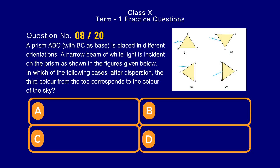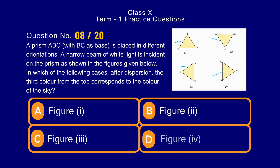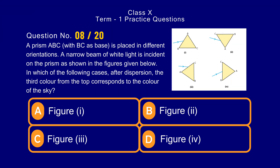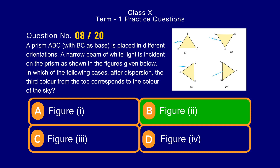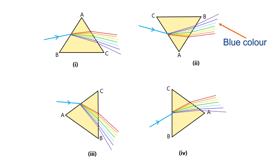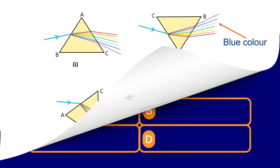Question number 8. A prism ABC is placed in different orientations. A narrow beam of white light is incident on the prism as shown in the figure. In which of the following cases, after dispersion, does the third color from the top correspond to the color of the sky? Options: a) figure 1, b) figure 2, c) figure 3, d) figure 4. The correct answer is option b) figure 2. The color of the sky is blue. The blue color appears third from the top when the prism is inverted.